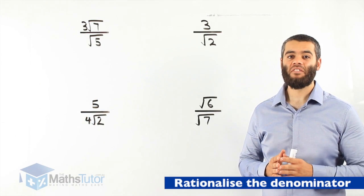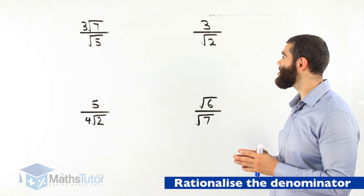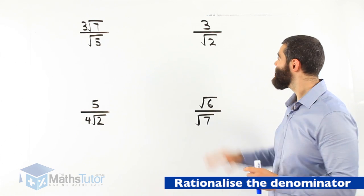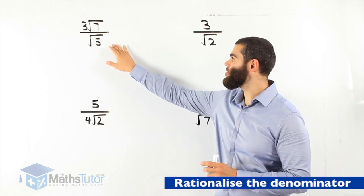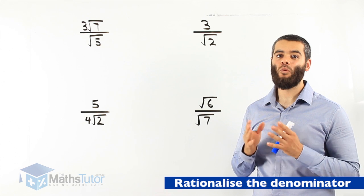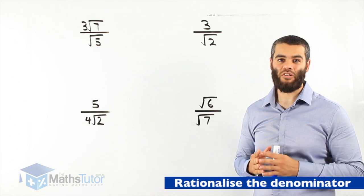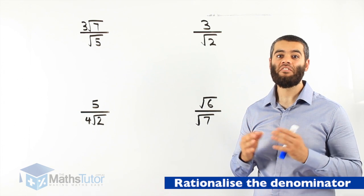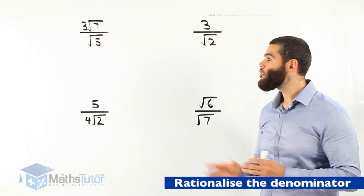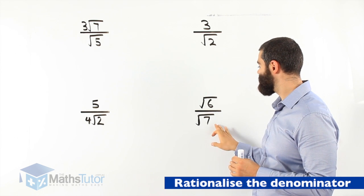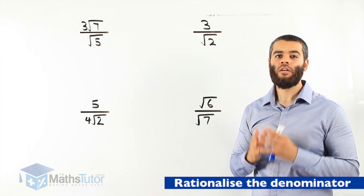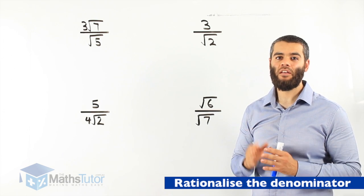Hey everyone. In maths we are sometimes faced with fractions that look like these ones. What do you notice? We notice that the denominator has a surd, so in fact it's an irrational number. We like to write it in a way where the actual denominator is rational. This process is called rationalizing the denominator. When we are faced with a fraction that has a surd as a denominator, we like to rationalize the denominator by making it into a rational number.